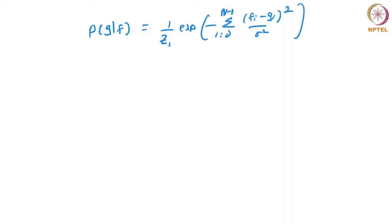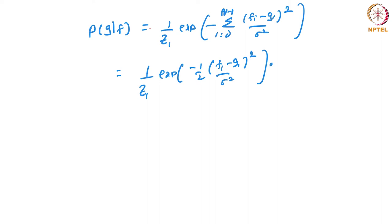The probability of observing the first pixel is exponential of minus (F1 minus G1) squared divided by sigma squared. The probability of observing the entire image is the product of observing each individual pixel. For pixel 1 it is exponential of minus (1/2)(F1−G1)² / σ², and similarly for pixel 2 — exponential of minus (1/2)(F2−G2)² / σ² — all the way to pixel N−1. We assume sigma is the same for all pixels.